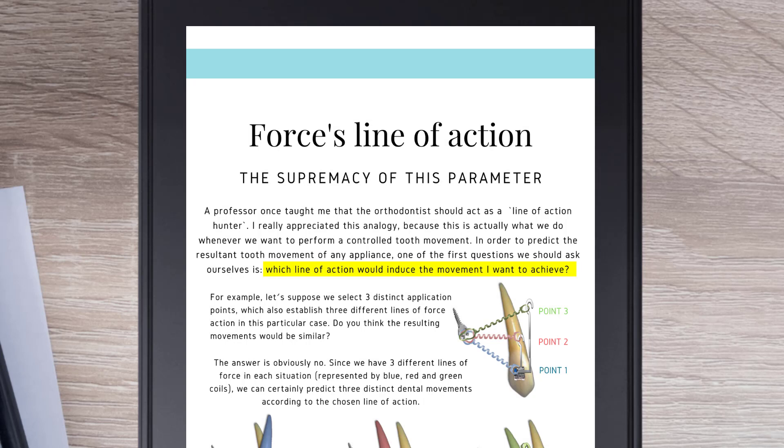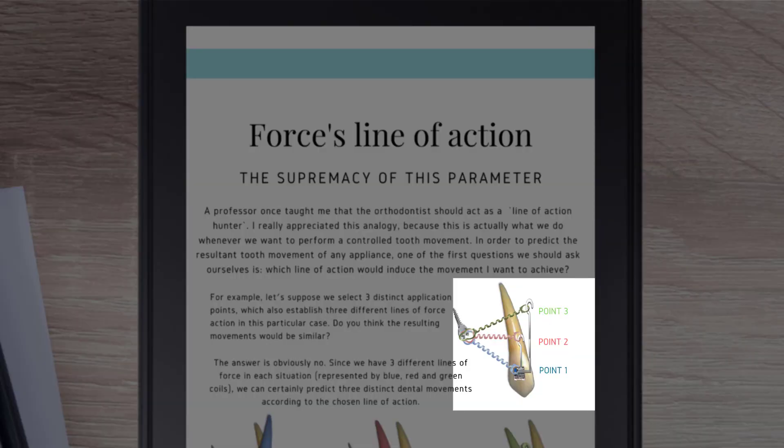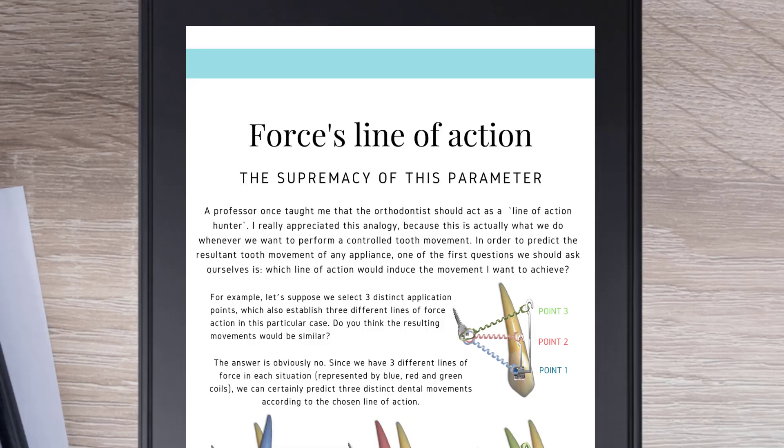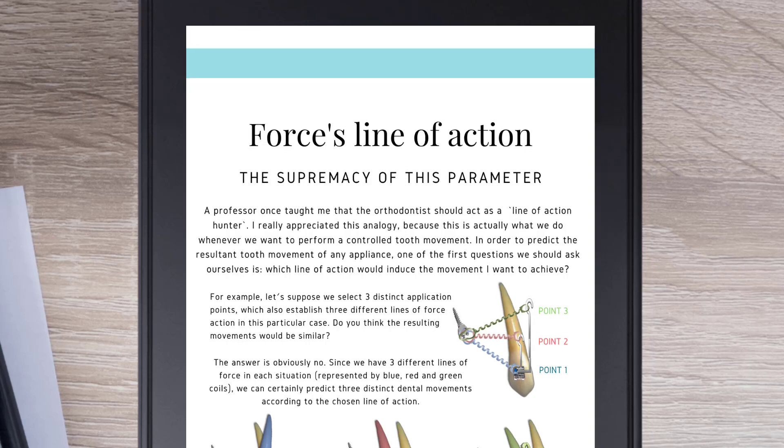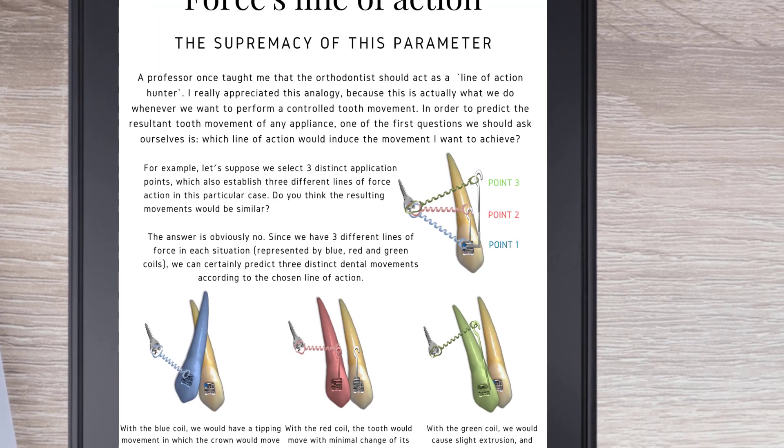For example, let's suppose we select three distinct application points, which also establish three different lines of force action in this particular case. Do you think the resulting movements would be similar? The answer is obviously no. Since we have three different lines of force in each situation, represented by blue, red and green coils, we can certainly predict three distinct dental movements according to the choosing line of action.